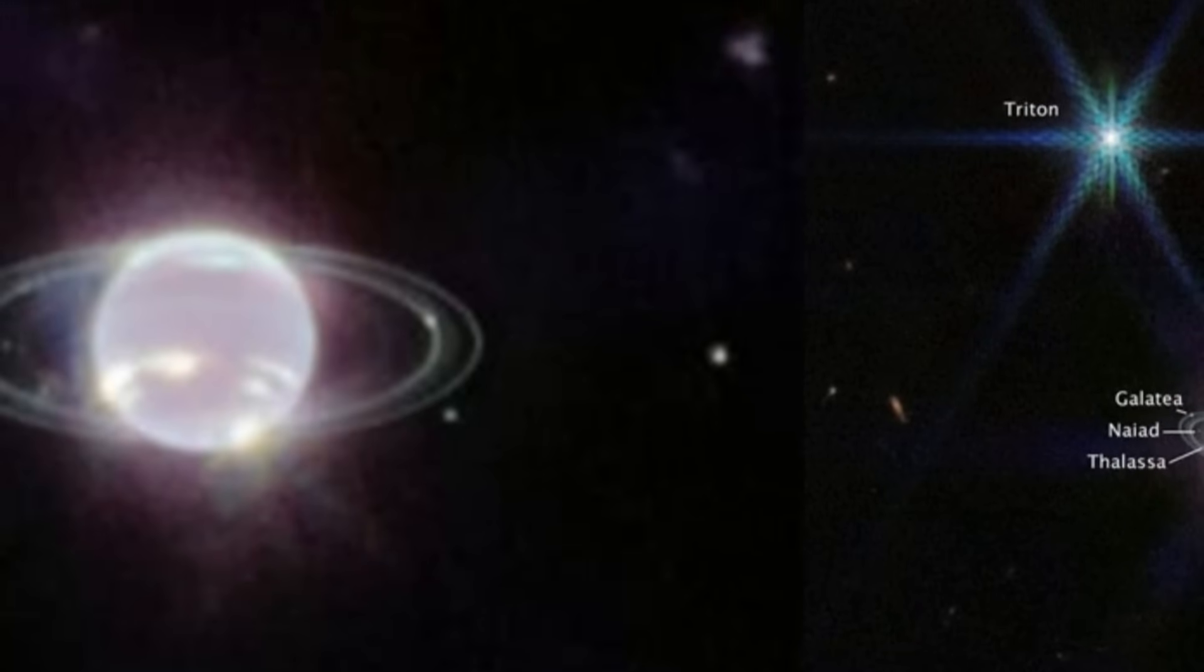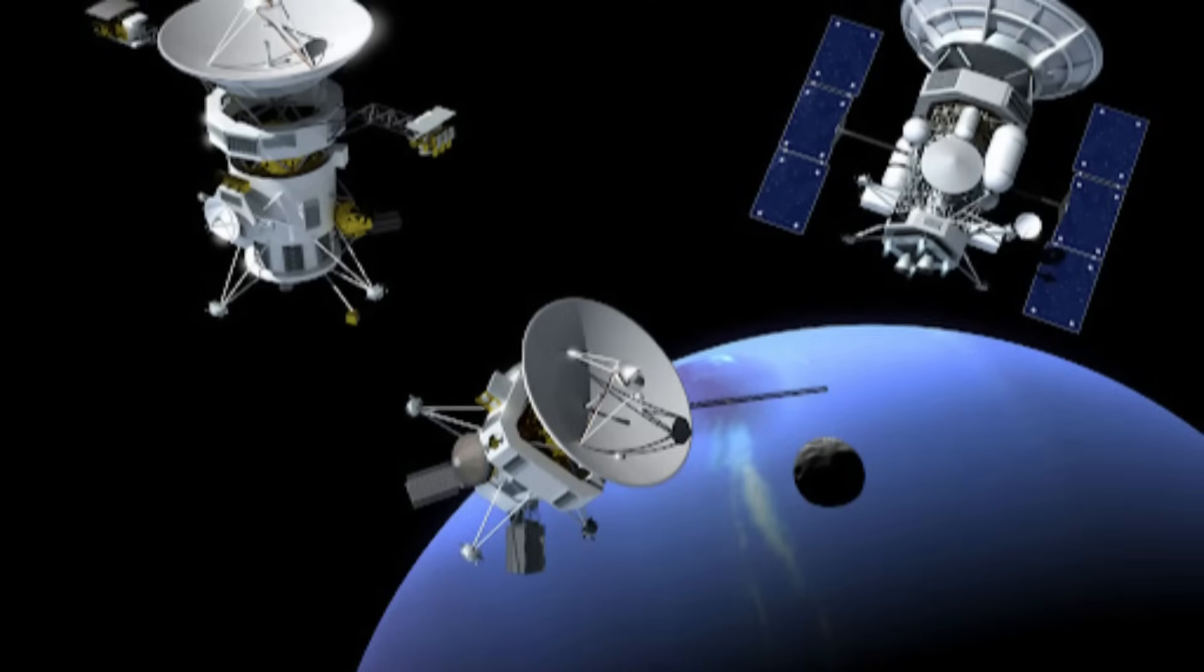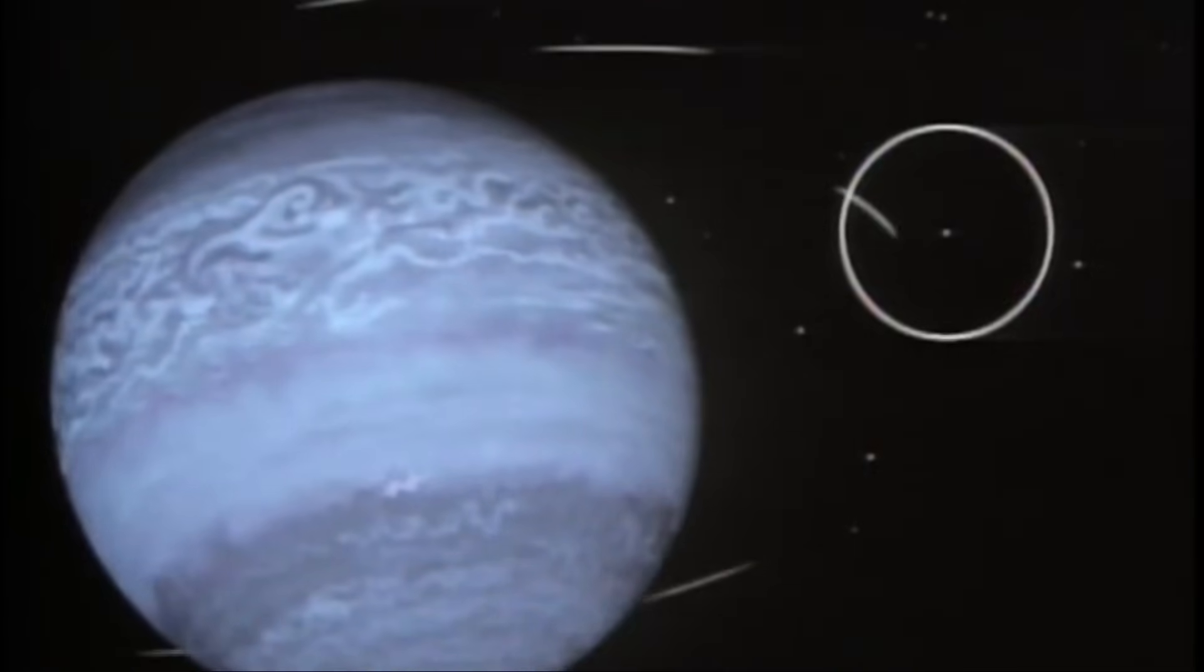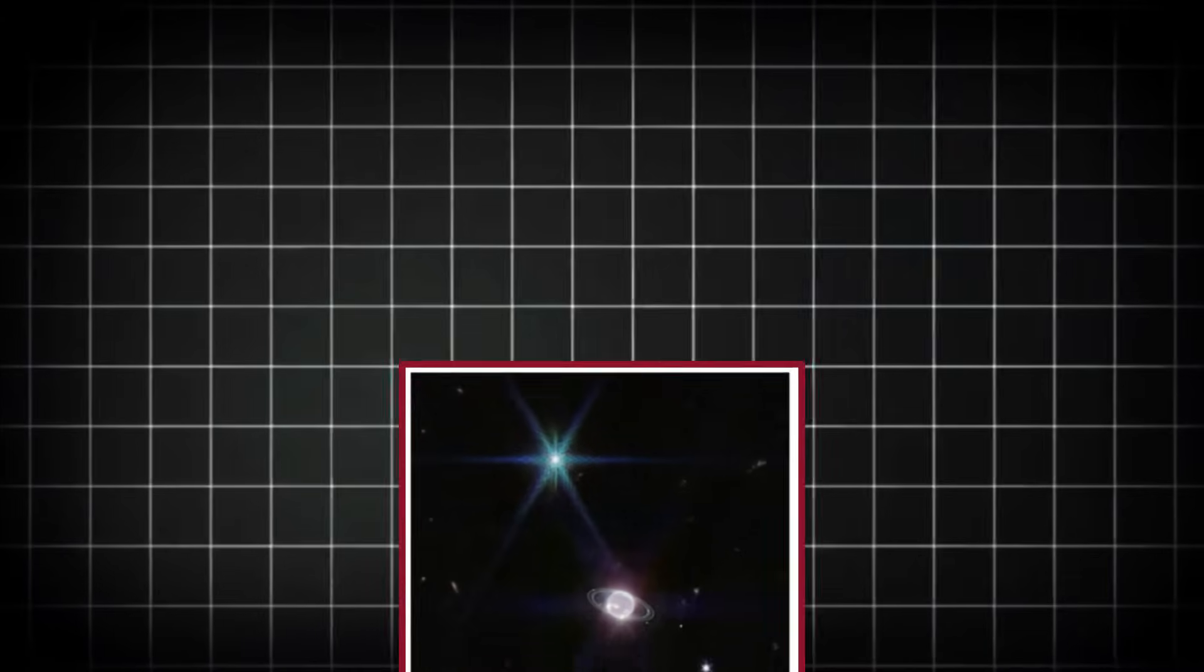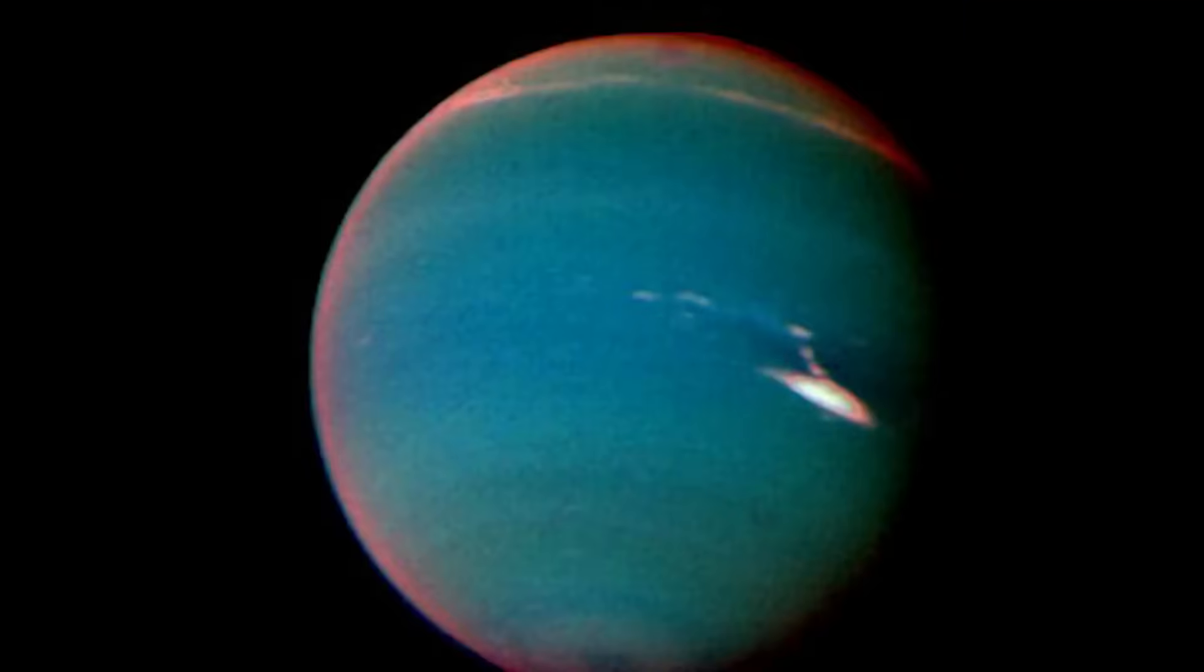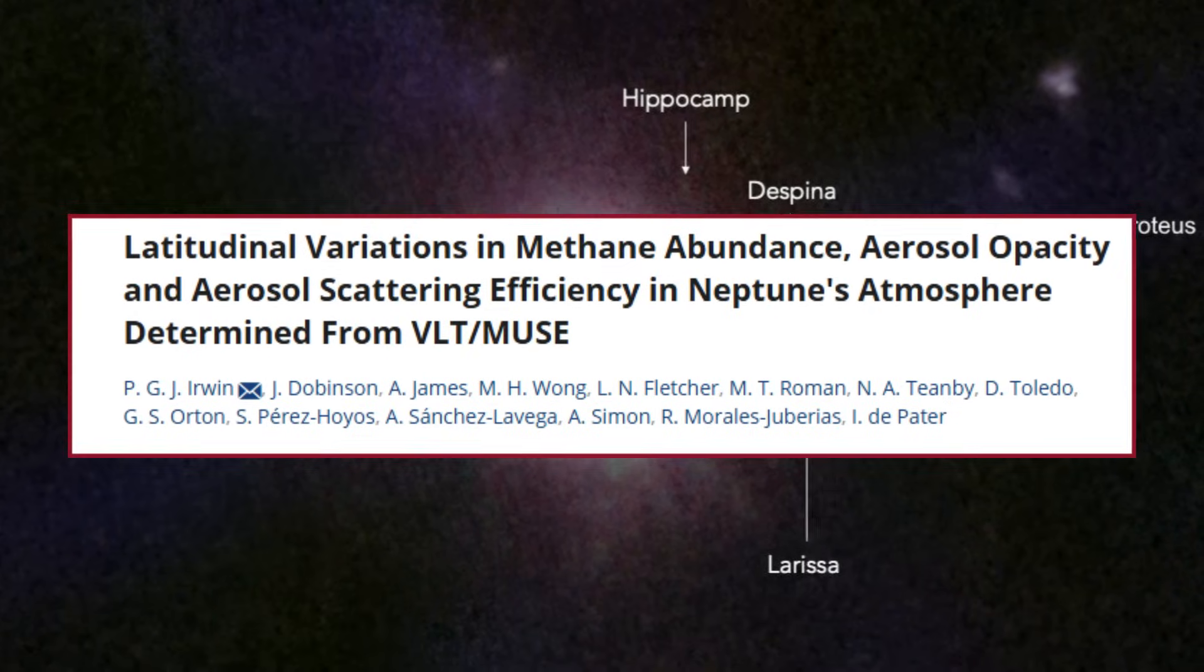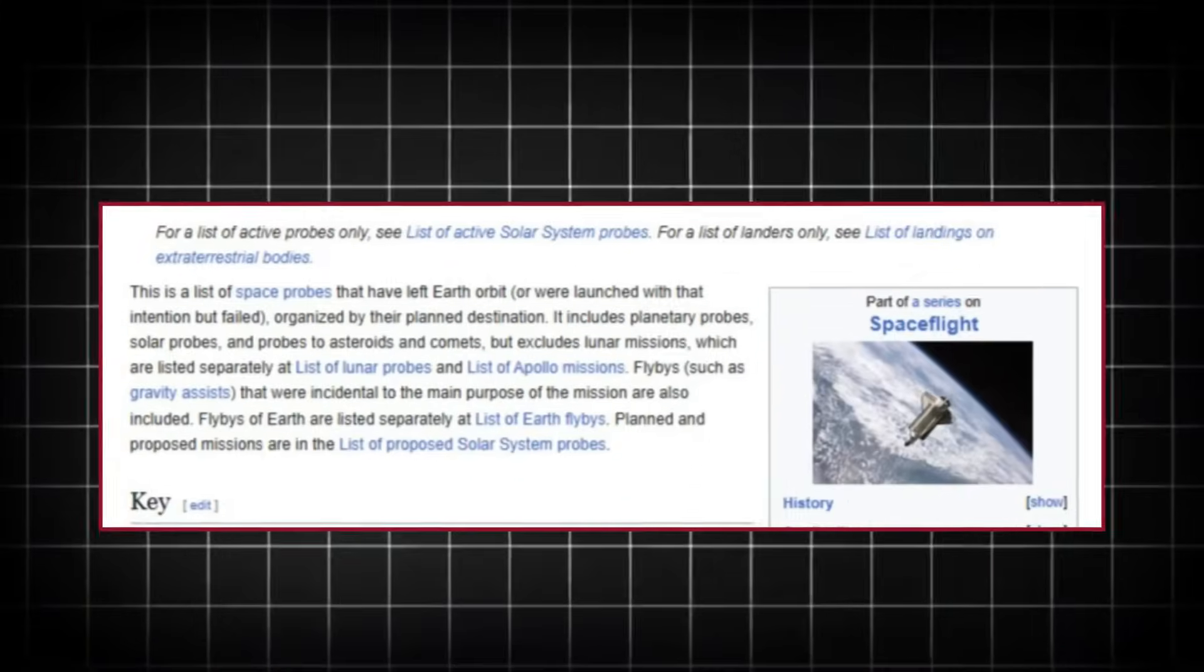The recent images of Neptune were captured by advanced instruments aboard space telescopes, such as the James Webb Space Telescope and specialized planetary probes. These instruments leverage cutting-edge technologies, including near-infrared imaging and adaptive optics, to produce images of unprecedented clarity and detail. For the first time in over three decades, JWST revealed Neptune's faint outer rings, some of which had not been observed since Voyager 2's flyby. The telescope's near-infrared capabilities also highlighted Neptune's atmospheric structure, revealing bright methane ice clouds and a series of previously undetected features near the planet's poles.